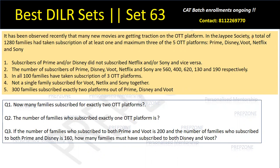The set says: it has been observed recently that many new movies are getting traction on OTT platforms. In the JP Society of Noida, a total of 1,280 families have taken subscription of at least one and maximum three of the five OTT platforms — Prime, Disney Hotstar, Bootz, Netflix and Sony. Then some information is given to us. Subscribers of Prime and/or Disney did not subscribe to Netflix and not Sony, and vice versa. The number of subscribers of Prime, Disney, Bootz, Netflix and Sony are given respectively.